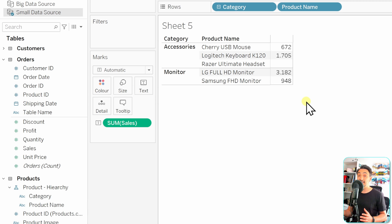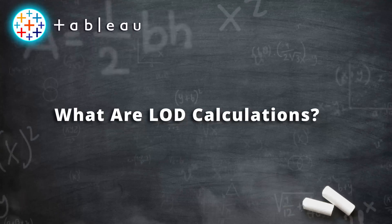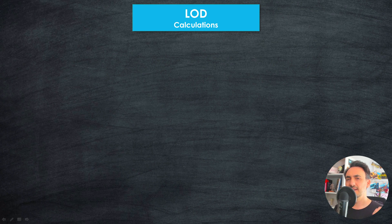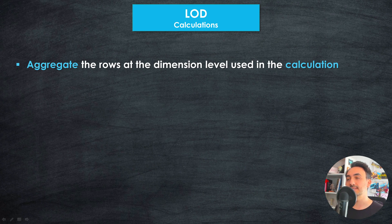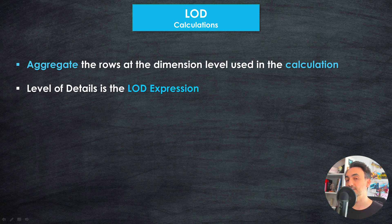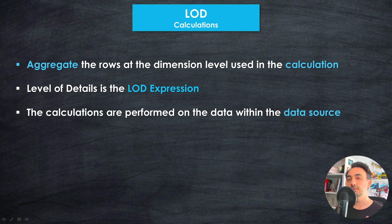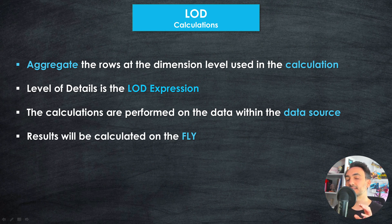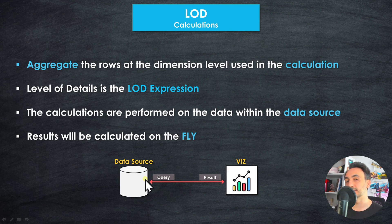Let's understand how LOD works. An LOD calculation aggregates the rows of the data source at the dimension level we specify inside the calculation — meaning the dimensions in the visualization will not control the level of details this time. Like aggregate calculations, Tableau queries the data source and brings the result to the visualization. The calculation happens on the fly: Tableau executes it only when you bring the field into the visualization, and does not pre-calculate or store information in the data source.